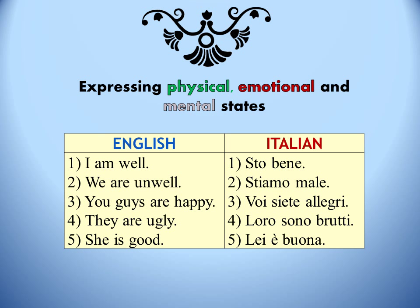When expressing physical, emotional, or mental states, English speakers always use the verb 'to be,' followed usually by an adjective or sometimes by an adverb.